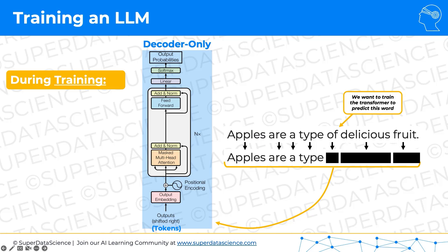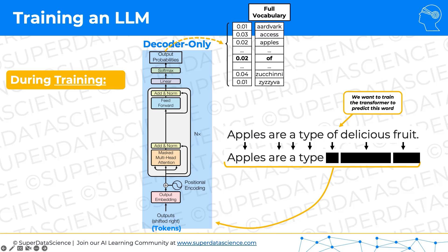Focusing on this one sample — 'apples are a type' and the target word 'of' — these words go through the transformer. In the masked multi-head attention, the three words on the right are masked. As a result, in the output, we will get a probability distribution.